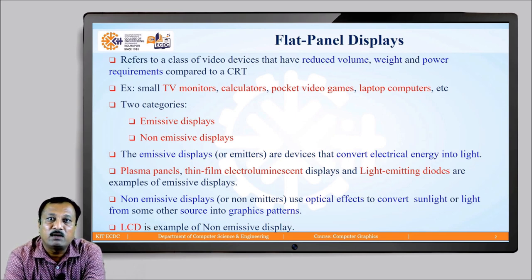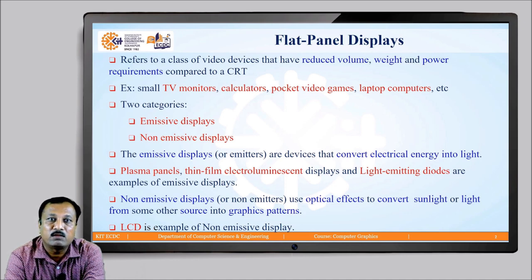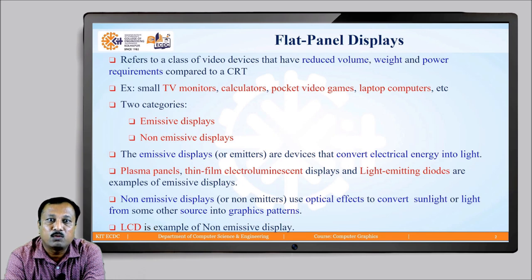Emissive type of flat panel display devices convert electrical energy into light. Plasma panels, thin film electroluminescent display devices, and light emitting diodes are examples of emissive display devices. Non-emissive display devices use optical effects to convert sunlight or light from different sources into graphic patterns. An example of non-emissive display devices is liquid crystal display.